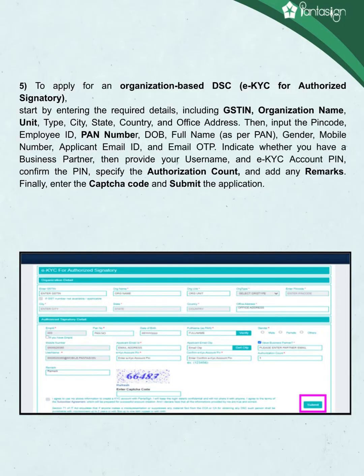To apply for an organization-based DSC EKYC for authorized signatory, start by entering the required details including GSTIN, organization name, unit, type, city, state, country, and office address.